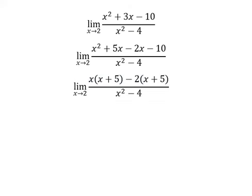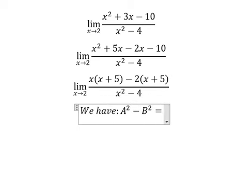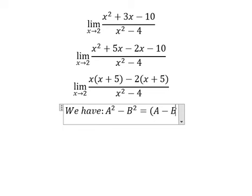Next, we use the difference of squares formula: A² - B² equals (A - B)(A + B). So x² - 4 equals x² - 2².